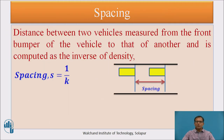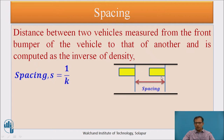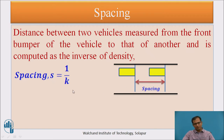Another term is spacing. Spacing is the distance between two vehicles measured from the front bumper of one vehicle to the front bumper of the following vehicle. It is measured bumper to bumper between the leading and following vehicle. Spacing S is the inverse of density K, so S = 1/K.